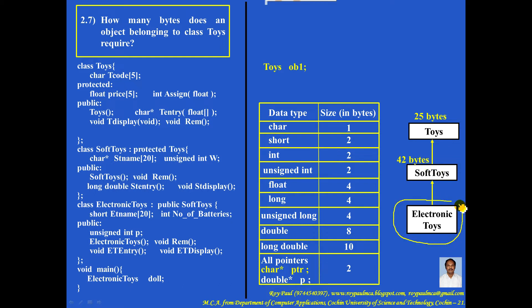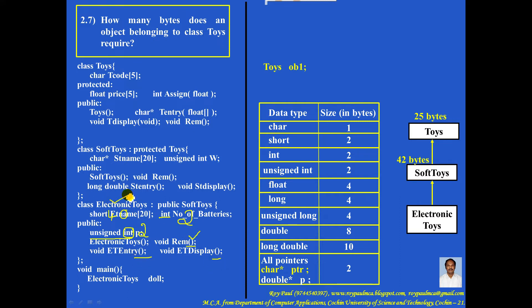Similarly, let me calculate the size of class ElectronicToys. There are 20 short variables: 2 bytes each, so 20 into 2 equals 40. Then there is 1 integer: 2 bytes, so 40 plus 2 equals 42. Then 1 unsigned integer — all integers are 2 bytes — so 42 plus 2 equals 44. The remaining ones are functions. So for the class ElectronicToys, the total size is 40 plus 2 plus 2, which is 44 bytes.